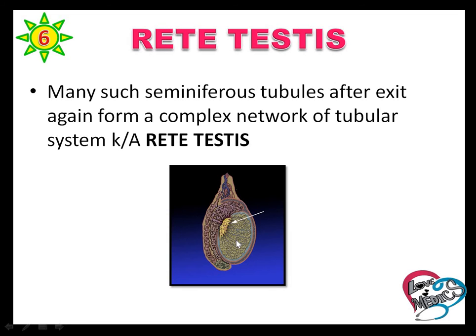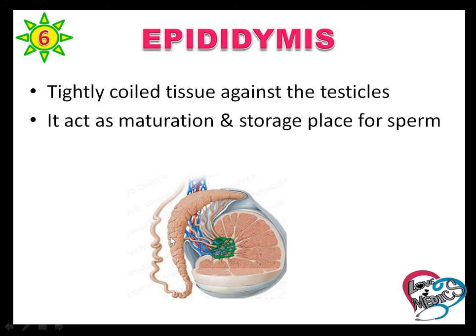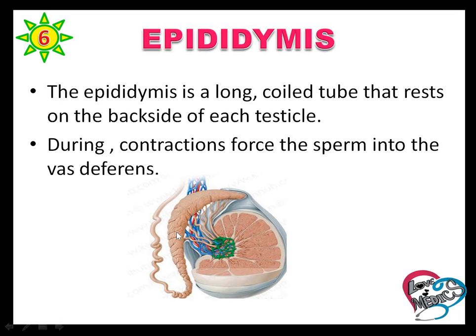Each testicular lobule has a tightly coiled structure called seminiferous tubules, which are responsible for spermatogenesis — sperm production. The immature sperm produced in the seminiferous tubules pass into the epididymis with the help of the rete testis. This is the rete testis. The epididymis is a tightly coiled tissue against the testis and acts as a maturation and storage place for the sperm.